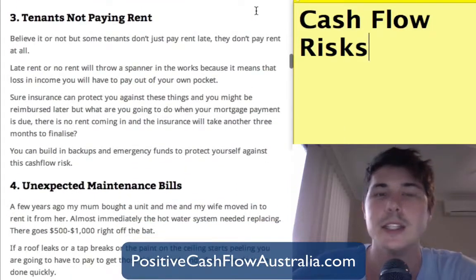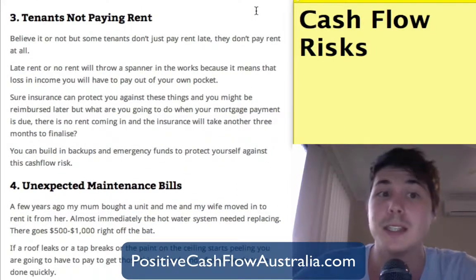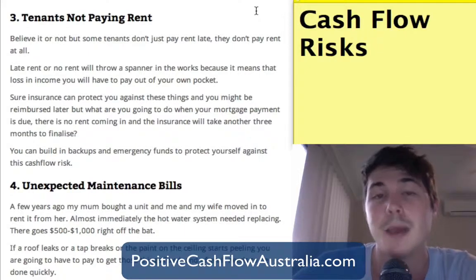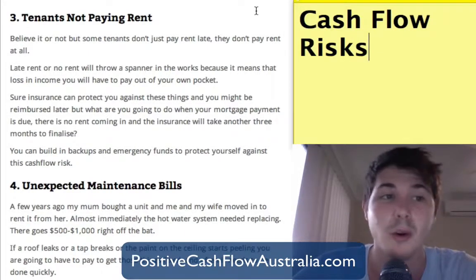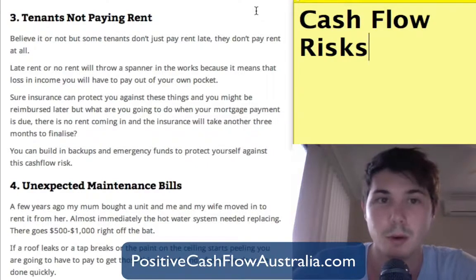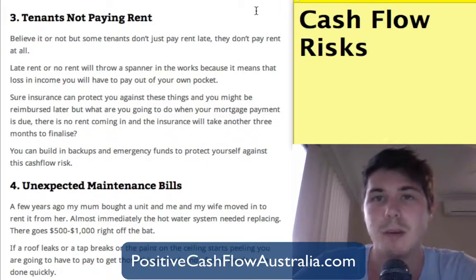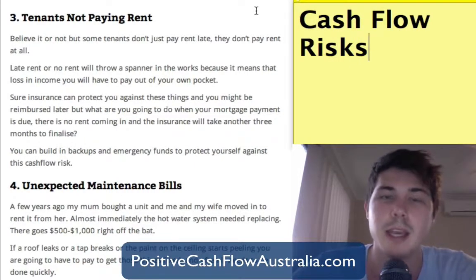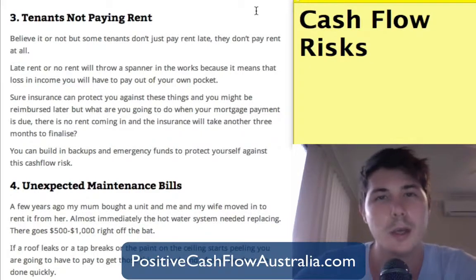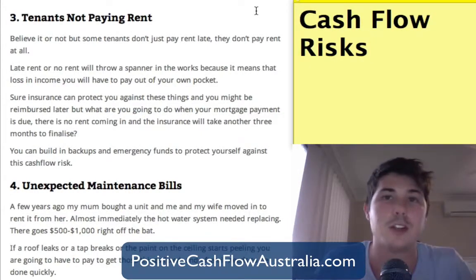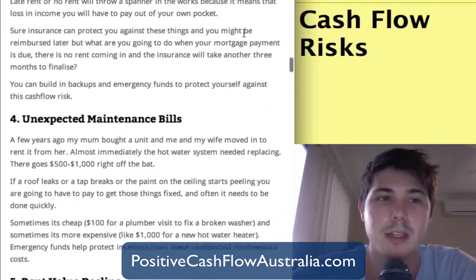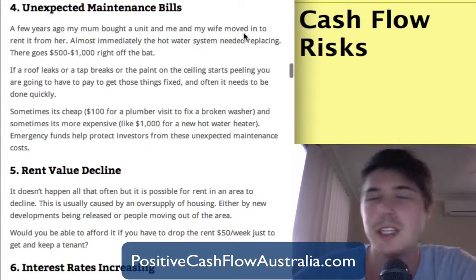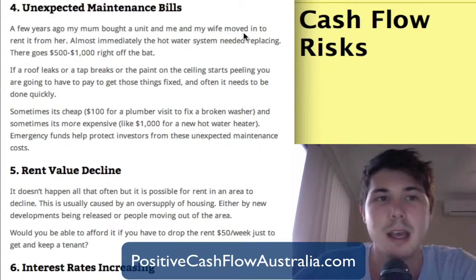Risk number three is your tenants not paying rent. Some tenants pay rent late or don't pay at all, and late or missing rent means a loss of income you'll have to cover out of your own pocket. Insurance can protect you if tenants run away and you can't recover the money, but there's always a delay between when the insurance payment arrives and the bills you have to pay, so you need to take that into account.